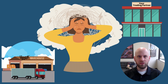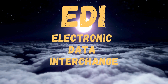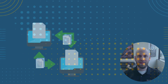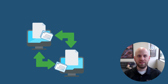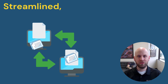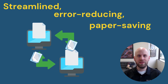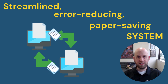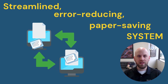But what if I told you there's a solution that can turn those nightmares into sweet dreams? It's called Electronic Data Interchange, or EDI. EDI automates the exchange of business documents, replacing manual data entry. It's a streamlined, error-reducing, and paper-saving system for transmitting information like purchase orders, invoices, shipping notices, and more, all electronically.